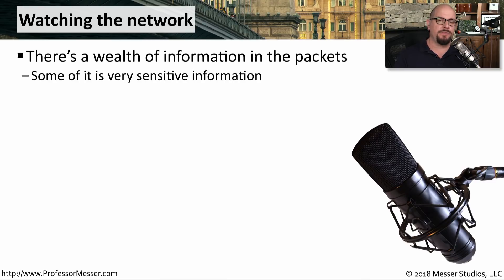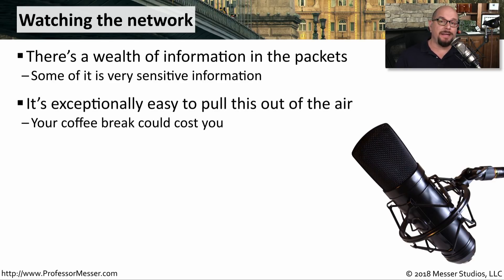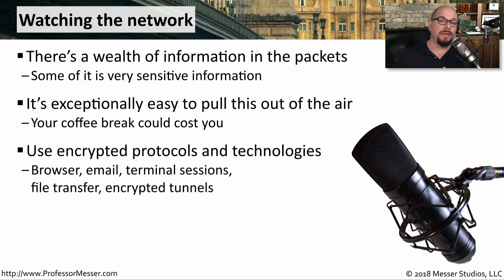One very easy place for bad guys to gather information is from the airwaves. Our wireless networks are putting a lot of information over the air, and it's very easy to use a network analyzer to see what's going on across the network. You could be at an industry event or a coffee shop using the wireless network, and someone may be able to gather information from the traffic flows coming from your computer. That's why it's very common for someone outside of the building to use a VPN that will encrypt all of the information going to and from their computer, or to make sure the browser is always using HTTPS, or that the email client is always communicating over an encrypted channel.